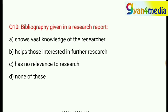Question 10: bibliography given in a research report — option A, shows vast knowledge of the researcher; option B, helps those interested in further research; option C, has no relevance to research; or option D, none of these. Options C and D can be eliminated. Comparing A and B, the correct answer is option B — bibliography is given so that those interested in further research can be helped.